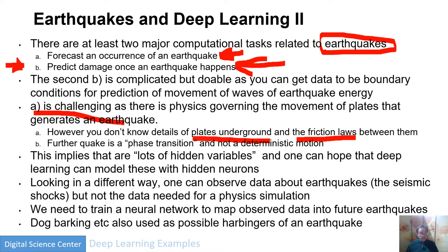This application really highlights the word 'hidden variable,' because it truly is hidden — we do not know what the faults are doing. We can observe data about the earthquake: the aftershocks, the water gurgling out when there's about to be an earthquake, or the goats doing whatever goats do. But we don't actually have the physics needed for a real simulation. We're trying to map the observed data into a future forecast for earthquakes. My friend John Rundle at UC Davis calls this pattern informatics, and it underlies a lot of deep learning — you want to learn patterns and their consequences.